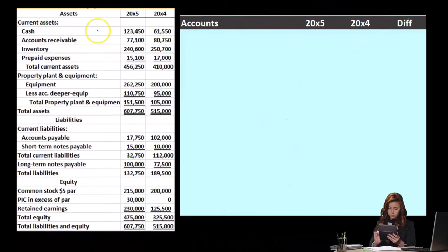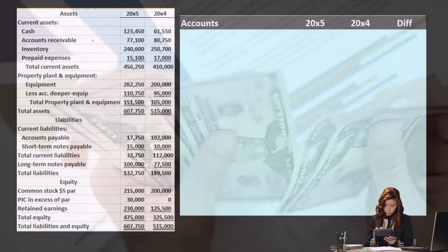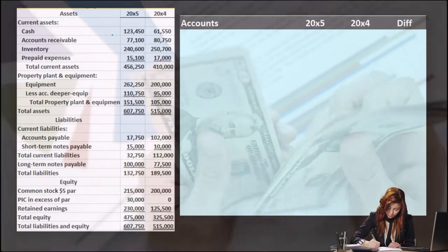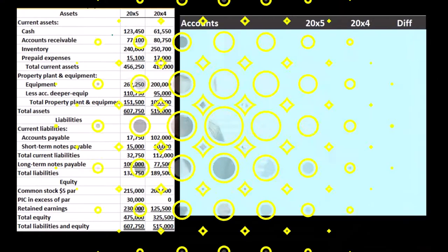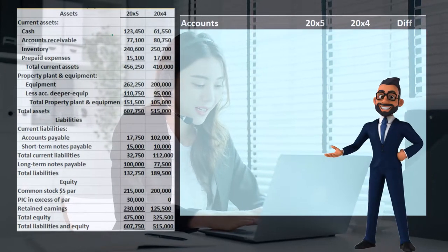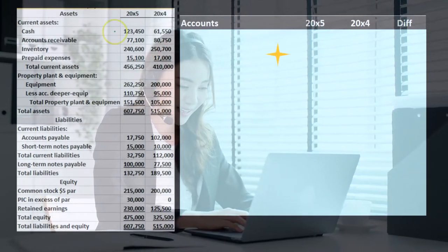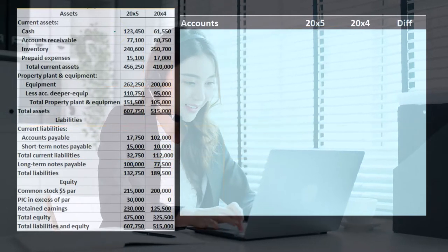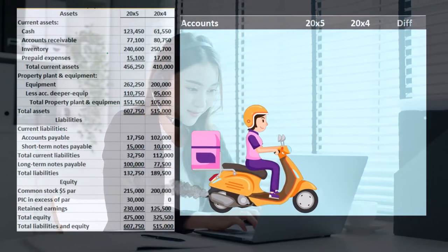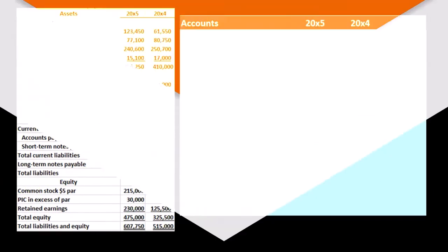Now we're going to take the difference in the comparative balance sheet and create our worksheet. Some people will just take the comparative balance sheet and take the difference. But it's easier to put it into a worksheet — more of a post-closing trial balance type worksheet. I'm going to do the opposite of what we typically do when we create the balance sheet, and that is to take it from a plus-and-minus balance sheet to a debit-and-credit format trial balance. By doing that, it'll be much easier to do the calculations.